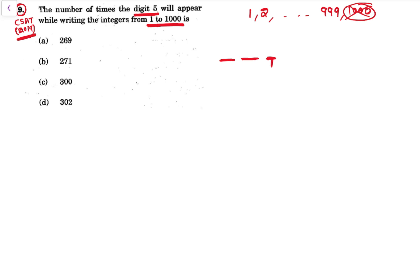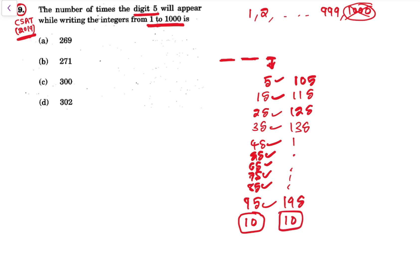Now let's check the number of times 5 appears in units place. That is 5, 15, 25, 35, 45, so on till 95. So there are 10 occurrences. Then 105, 115, 125, 135 so on till 195. Again these are 10 numbers with unit digit 5.